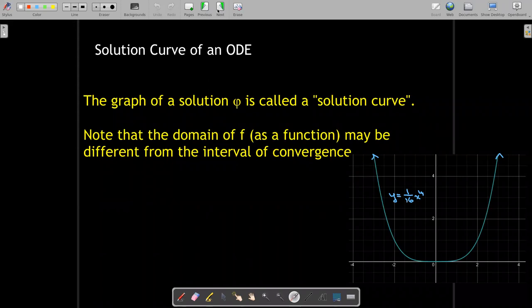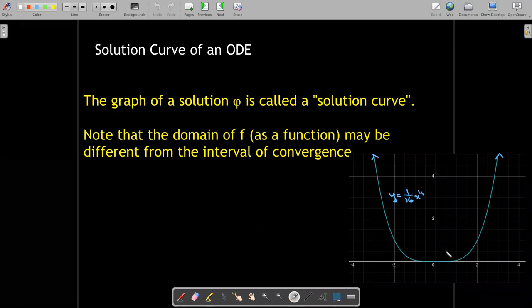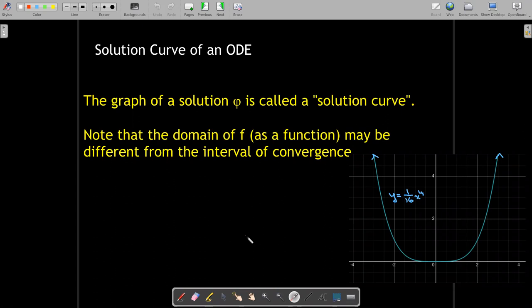A solution curve is simply the graph of the solution. In our previous example, we had a solution y equals 1/16th x to the 4th. And here is its graph. It's the solution curve. This becomes a little bit more interesting later on in the course, where the curve of the function may have several branches, but only one of those branches is valid for the solution. There is a difference between the graph of the function and the graph of the solution when the domain has to be restricted for the solution.